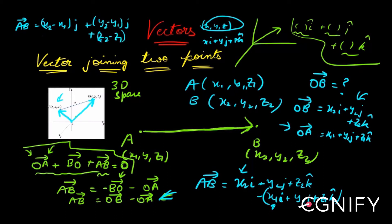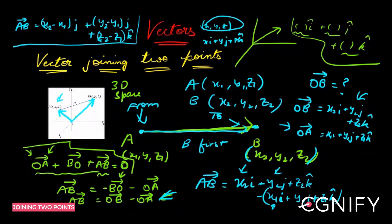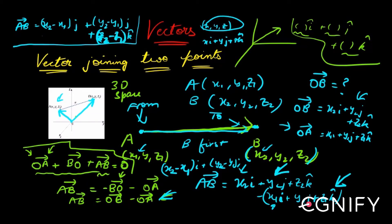So your AB bar = (x2 − x1)·i + (y2 − y1)·j + (z2 − z1)·k. This means if you need the vector from A to B: take the coordinates of B first, subtract the coordinates of A, then attach i, j, and k to the corresponding differences respectively.